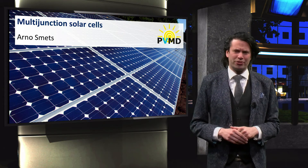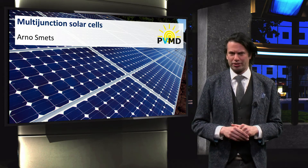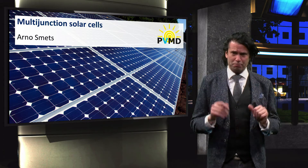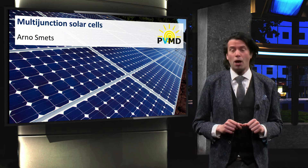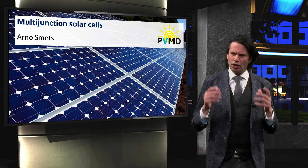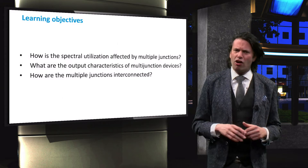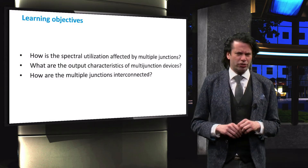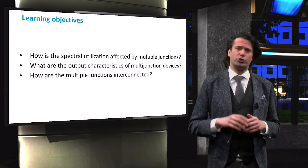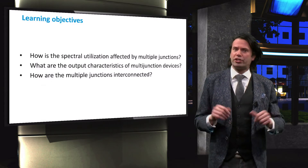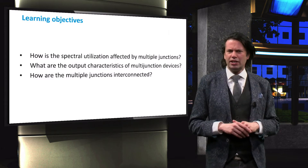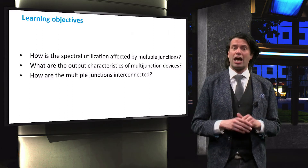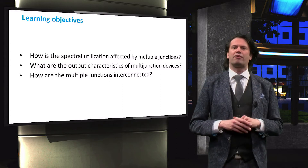We have discussed multiple design considerations for thin-film solar cells. In this video we will discuss another important concept for thin-film technologies: multi-junction devices. To create a good understanding of multi-junction devices, we will learn about the spectral utilization of a device with multiple junctions. We will discuss the output characteristics of such a device, and we will look at the interconnection of a multiple junction and how that affects the band diagram of the device.